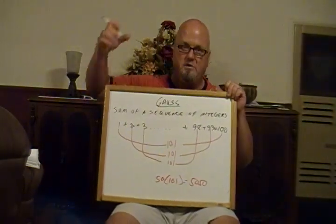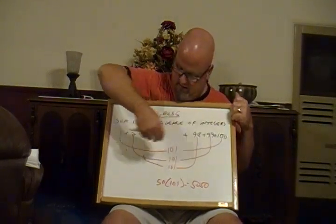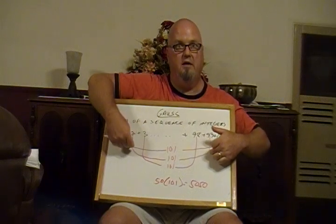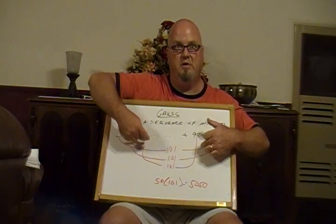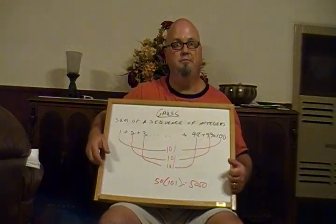So when you're working these problems from class, just write out a few of the numbers to get your sequence down right and look at pairing them this way, finding the pattern, pairing them this way, seeing how many pairs you have, and then it becomes a simple multiplication problem. So that's it.